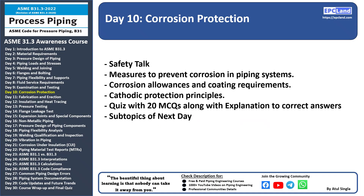Day 10: Corrosion Protection. This is the tenth topic in the awareness course on ASME B31.3. We have already covered introduction, material requirements, pressure design, piping loads and stresses, welding and joining, flanges and bolting, piping flexibility and support, fluid services, and examination and testing. In this 10th topic, we will cover measures to prevent corrosion in piping systems, corrosion allowances and coating requirements, and cathodic protection principles. We'll also have a safety talk and 20 MCQ questions with correct answers and explanations.